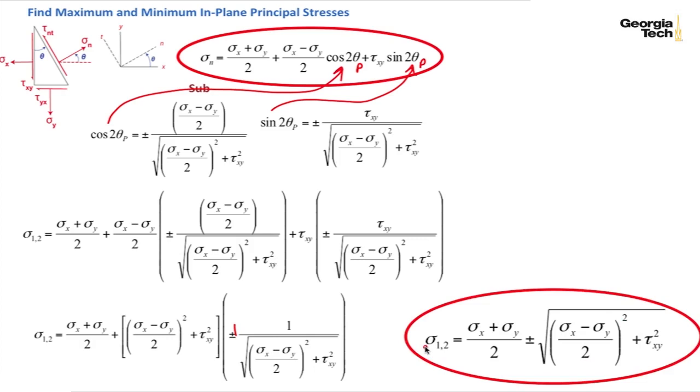Okay? And so here is our expression boiled down. And that now gives us the normal stresses on these principal planes. We have two of them and I've labeled them principal stress number 1 and principal stress number 2. Here it is again.